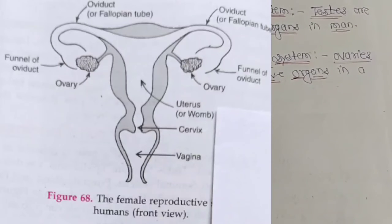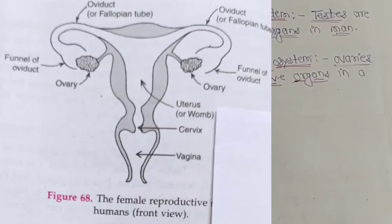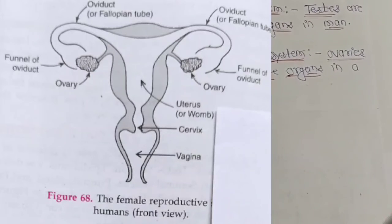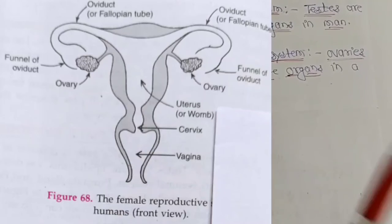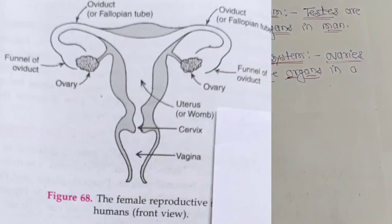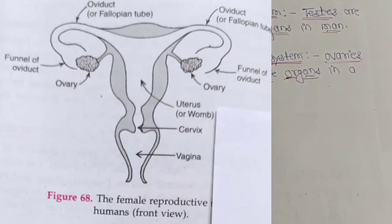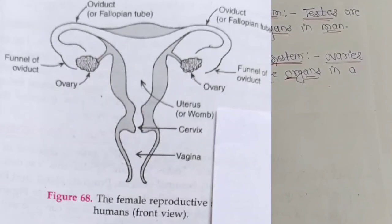It is obvious from this discussion that the female reproductive system in humans is more complex than the male reproductive system. This complexity in structure and function is necessary for the union of sperm and ovum inside the female body and the development of the baby in the mother's uterus.